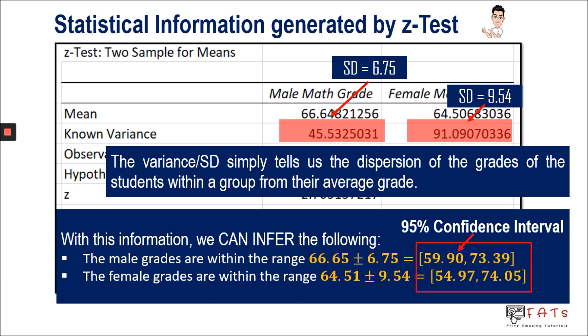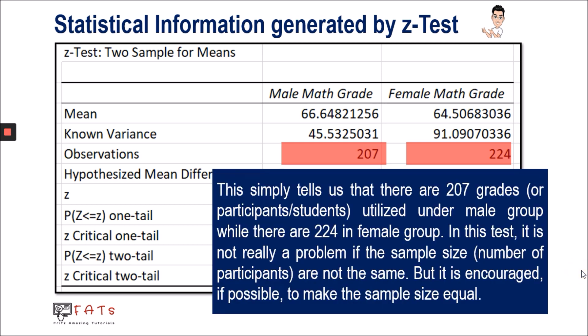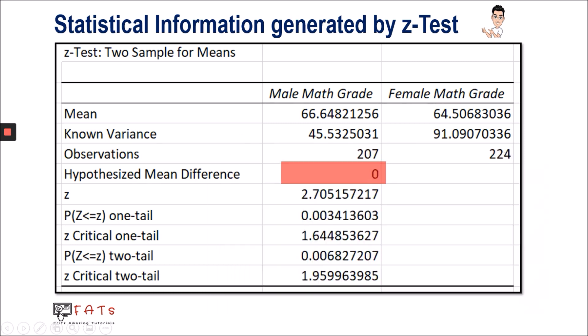If you go back to the dataset, you might notice some data that are outside this range — we call them outliers. The next information from this table is the observations, which tells us that there are 207 grades utilized under the male group and 224 grades utilized under the female group. The number of data gathered per group are not actually the same, but it is okay — though it is actually encouraged to make the sample size equal.